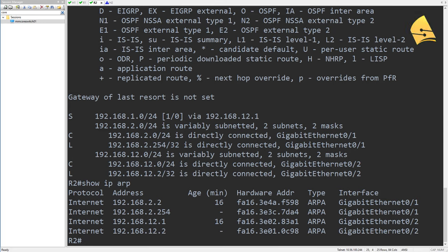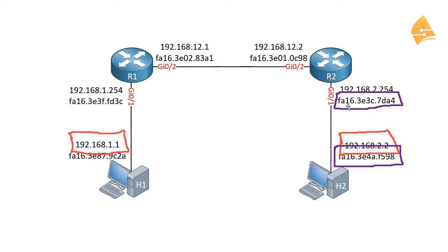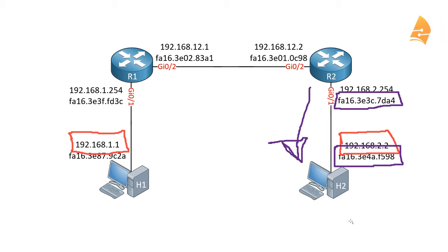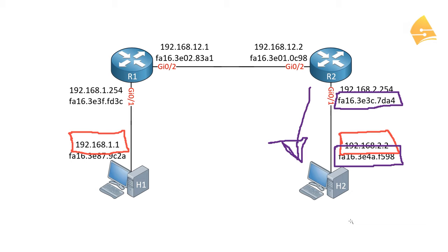The frame is then forwarded from R2 to host 2. Host 2 receives the Ethernet frame, checks the FCS, sees its own MAC address as the destination, de-encapsulates the IP packet, sees its own address as the destination, and then sends the data up to the transport layer where it will be processed further.